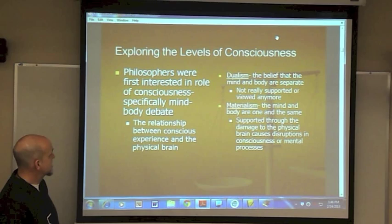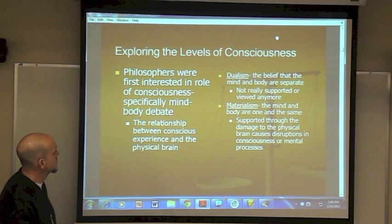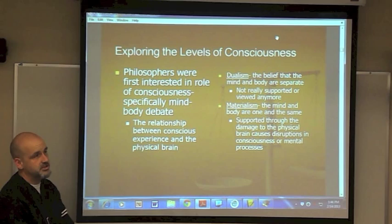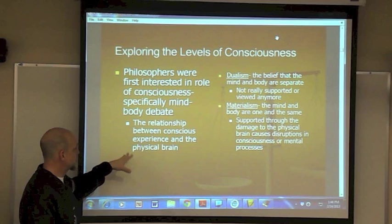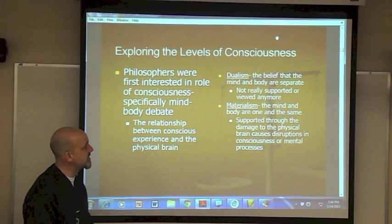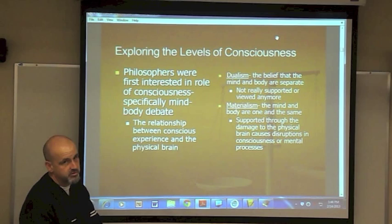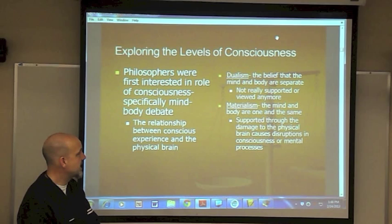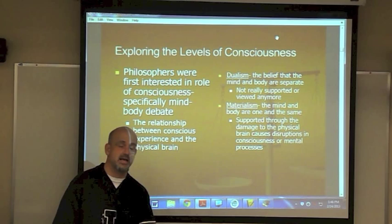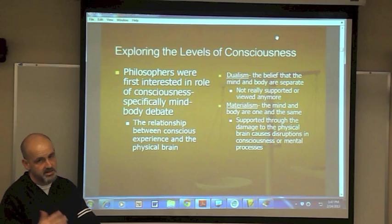Explaining the levels of consciousness goes back to the history of psychology. Philosophers like Aristotle, Socrates, and Plato first questioned consciousness and the relationship between conscious experience and the physical brain. Dualism — the belief that the mind and body are separate — was supported by Socrates and Plato, but is no longer seen as a valid explanation. Materialism — the mind and body are the same — was supported by Aristotle, and is supported by evidence that damage to the physical brain causes disruptions in mental processes. For example, a sharp blow to the head can cause retrograde amnesia.